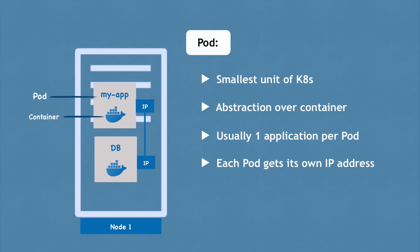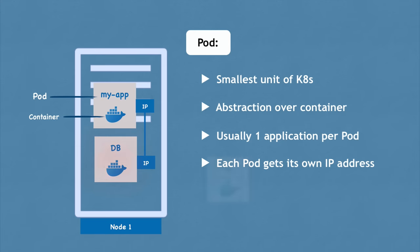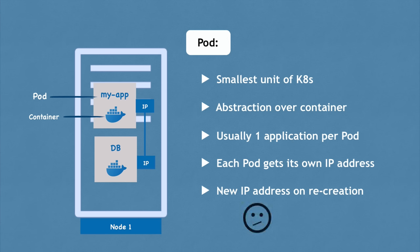Pod components in Kubernetes are ephemeral, which means they can die very easily. If a database container crashes because the application crashed or the server ran out of resources, the pod will die and a new one will get created in its place. When that happens, it will get assigned a new IP address, which is inconvenient if you are communicating with the database using the IP address, because you'd have to adjust it every time the pod restarts. Because of that, another component called service is used.